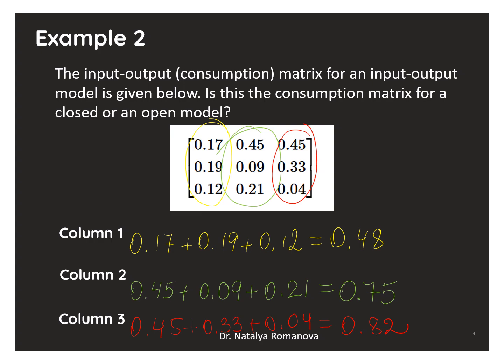None of the columns sum to 1. That means some of the output from each sector is going to final demand outside the system. This is an Input-Output Matrix for an Open Leontief model because it includes only production sectors. The sum of every column is less than 1.